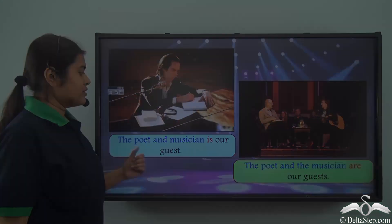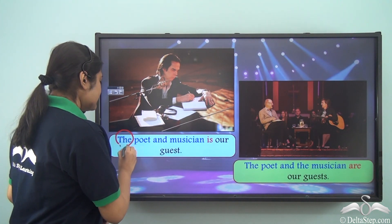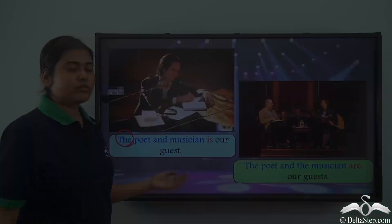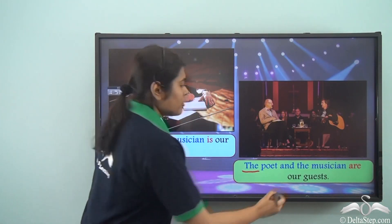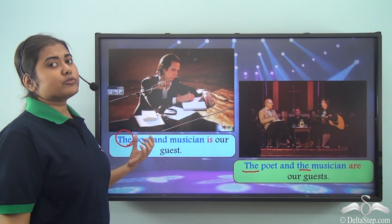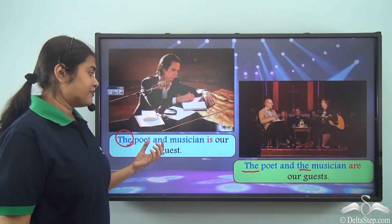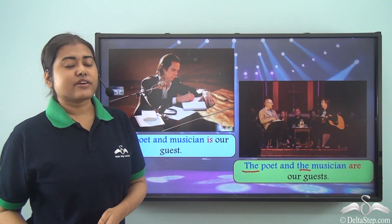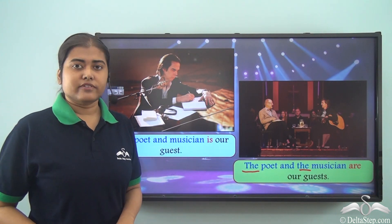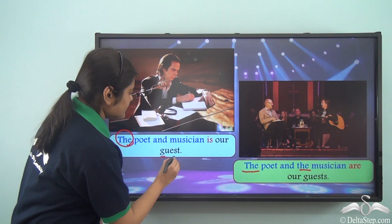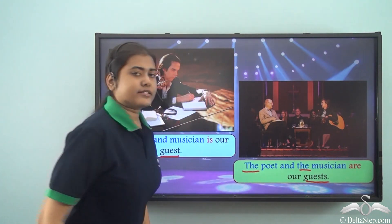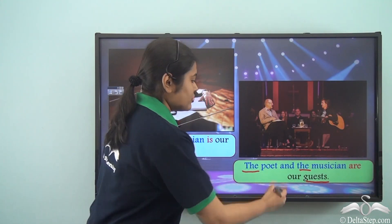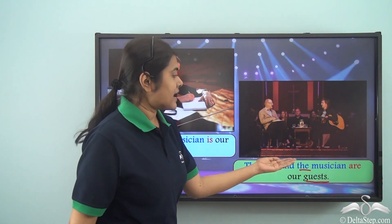Note something interesting: when we use the article 'the' only once before 'poet and musician,' we are referring to the same person, so the verb is singular. When 'the' appears before both nouns, we are referring to two persons, so the verb is plural. Also as a hint: 'guest' (singular) appeared in the first case and 'guests' (plural) in the second — indicating one guest vs. two different guests.